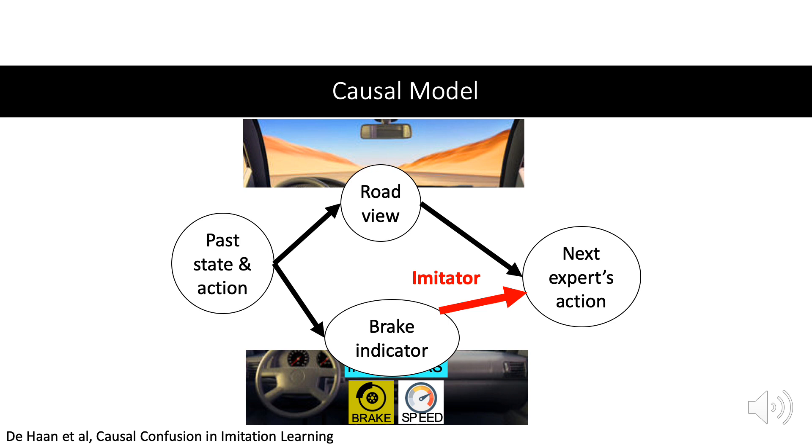In general, if we have n state variables, we have 2 to the n possible causal graphs, one of which reflects the true causes the expert pays attention to.